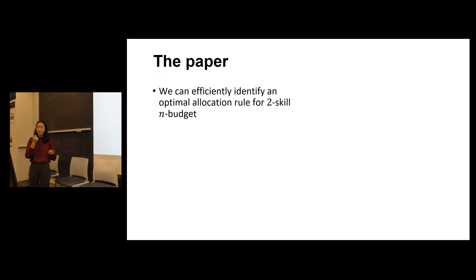So in our paper, we show that we can efficiently identify an optimal allocation rule for the case of two skill and budget. And in particular, this result also extends the toy case of two skill two budgets.